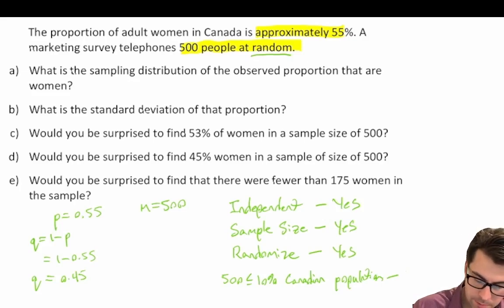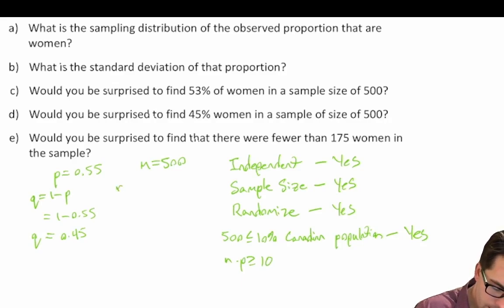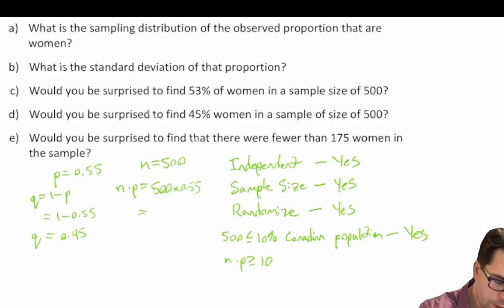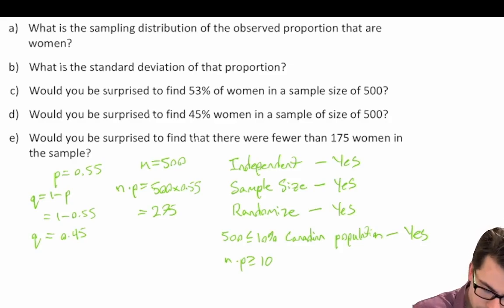500 would certainly be less than 10%, so yes. And finally, does n times p need to be greater than or equal to 10? Let's check: n times p is equal to 500 times 0.55, which is equal to 275. So yes.